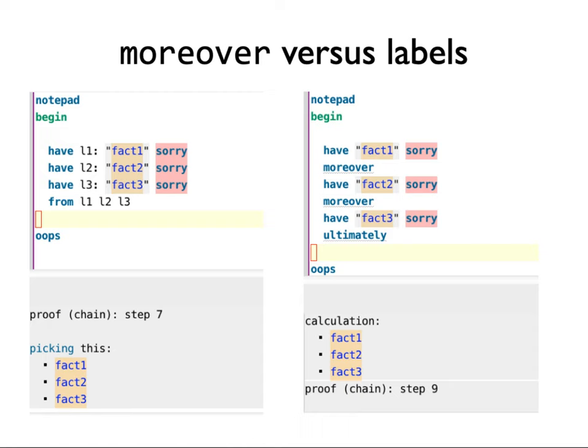By the way, 'notepad' is a useful thing — if you want to fool around with stuff that is not a real proof, you can type 'notepad' then 'begin' and 'end' and just write stuff in there. On the left we have a bunch of facts with labels, and on the right we have the corresponding version with 'moreover'. At the bottom of the slides you can see that on the left side you are simply picking the three theorems using 'from', while on the right side they are being given to you because you used 'ultimately'.